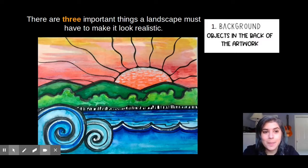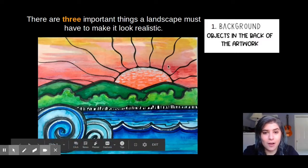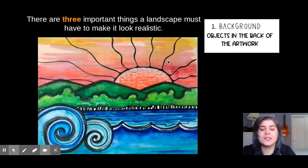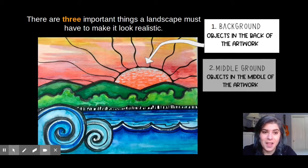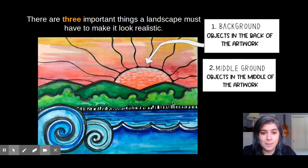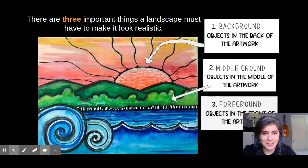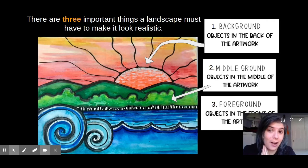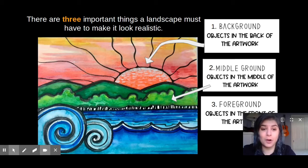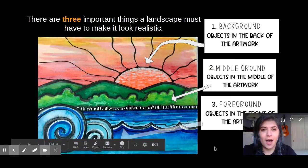The background is the part of your artwork that is the furthest away, and it's almost always towards the top of the page. For example, in this artwork, it is the sunshine. The middle ground is your objects in the middle of your artwork — right in the middle of your paper. The middle ground in this artwork is the mountains and the trees. Last but not least, we have the foreground. The word foreground starts with the letter F, and front also starts with the letter F, so that can help you remember that the foreground is what is closest to the front of your artwork.